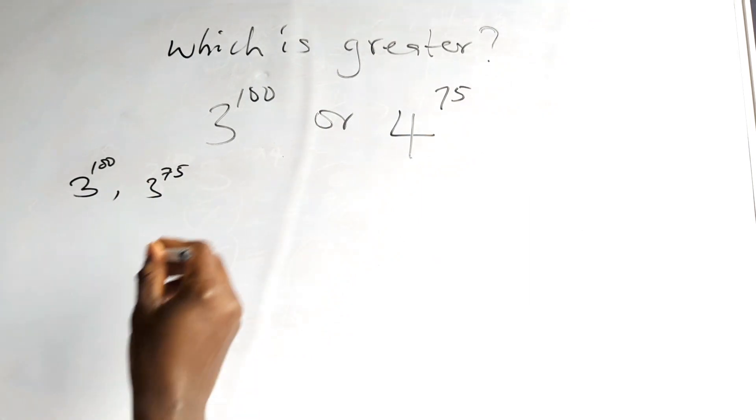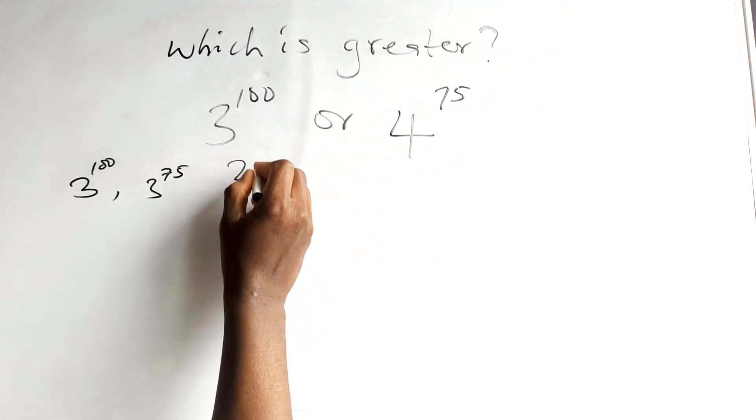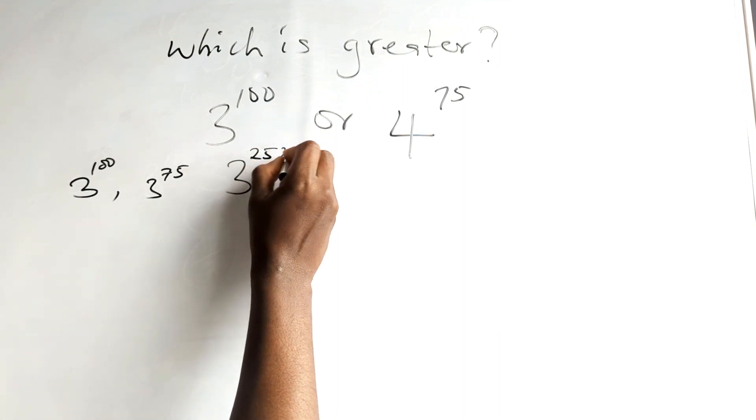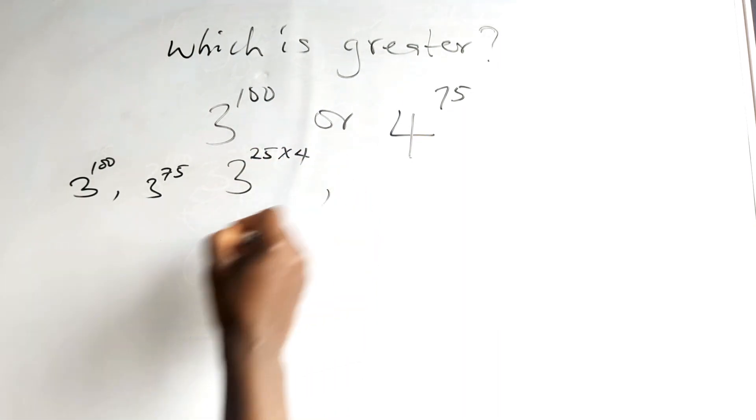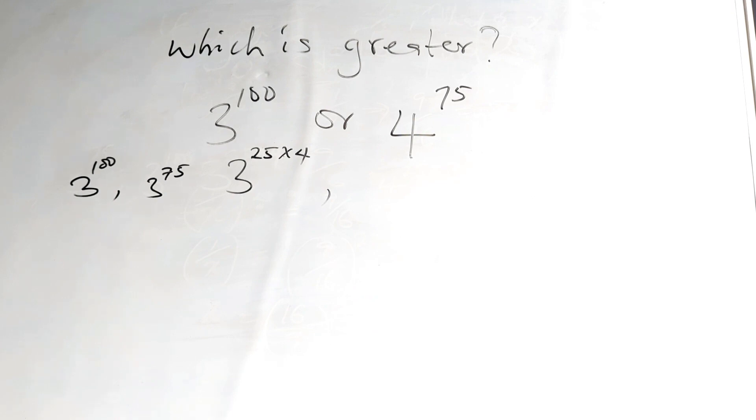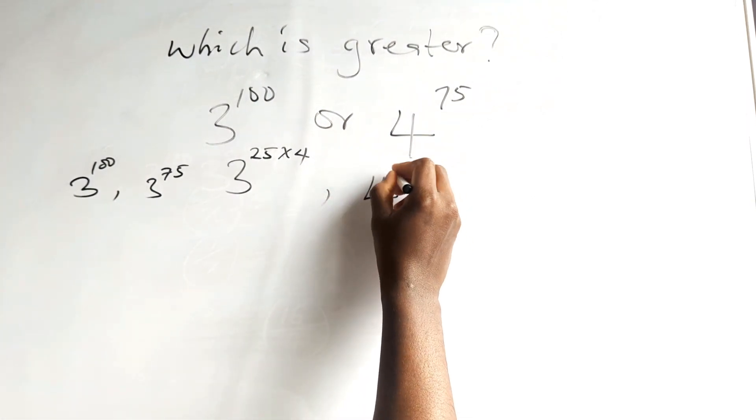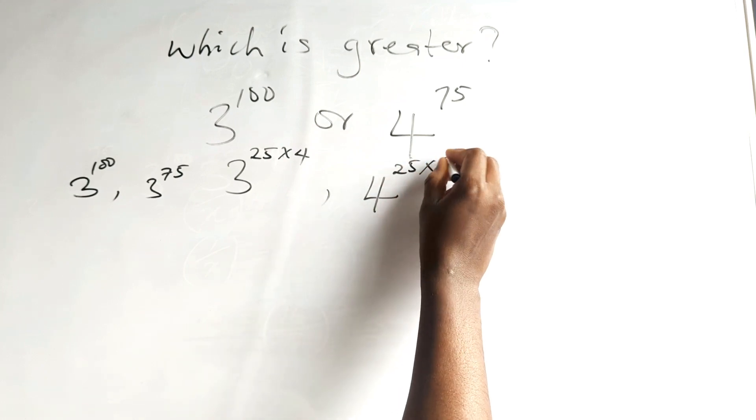So, 3 raised to power 100 is the same thing as 3 raised to power 25 times 4. While 4 raised to power 75 is the same thing as 4 raised to power 25 times 3.